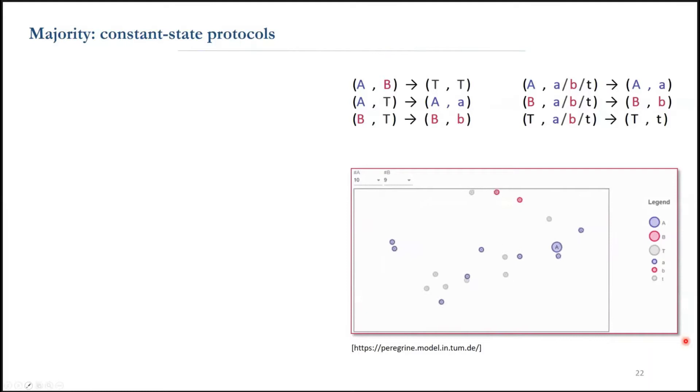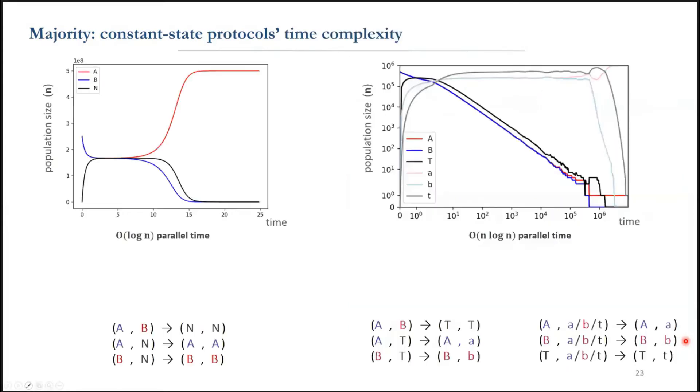I should also mention that the population protocol model is slightly different from this geometric version shown in peregrine and contains only independent random pairs of agents.